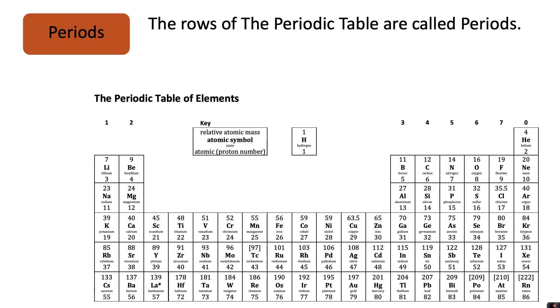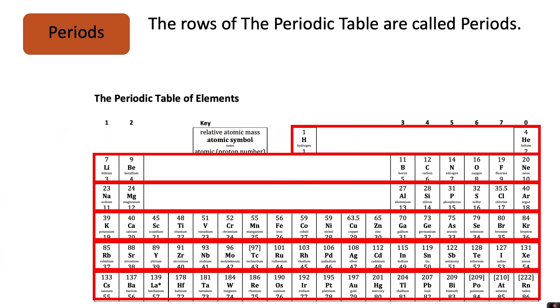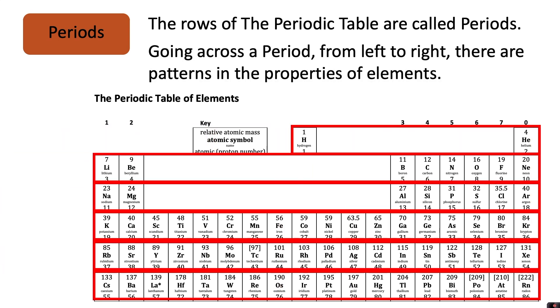The rows of the periodic table are called periods. Going across a period from left to right there are patterns in the properties of the elements. The first period is called period one followed by two, three, four, five and six.